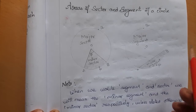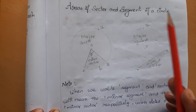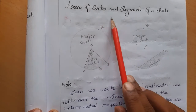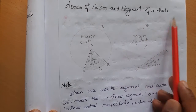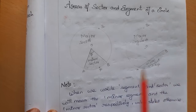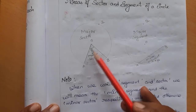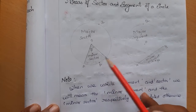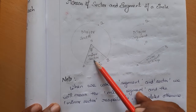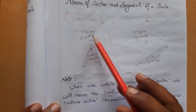Hi students, here we go for the next topic: areas of sector and segment of a circle. We know that this part we call a sector, and the small one is the minor sector.